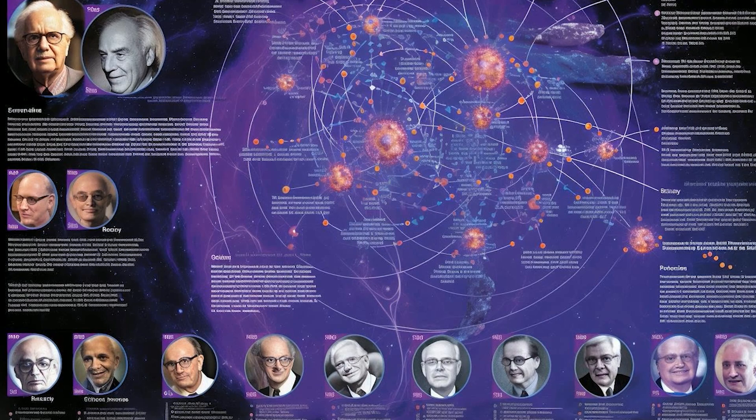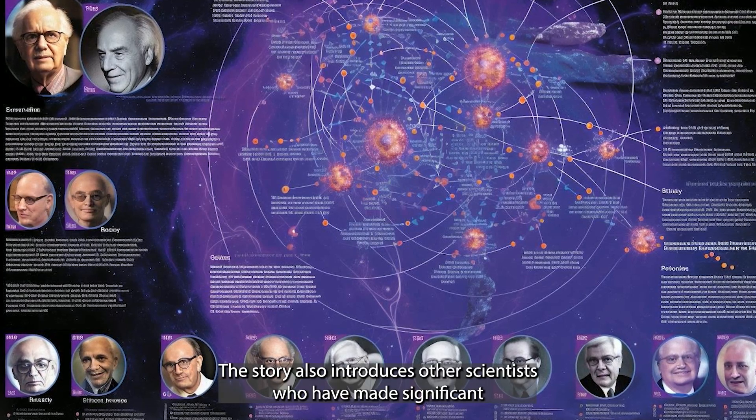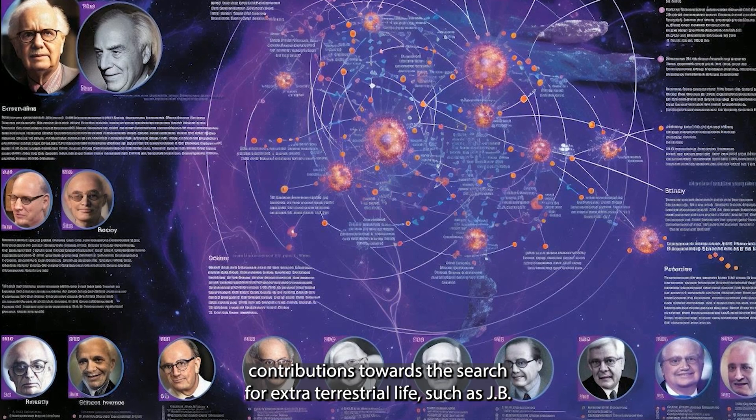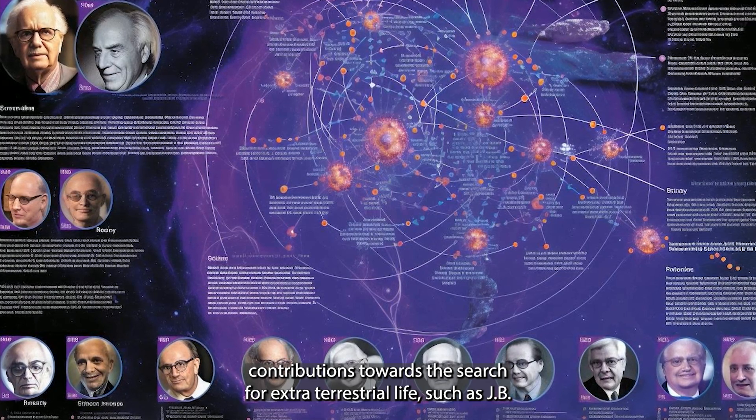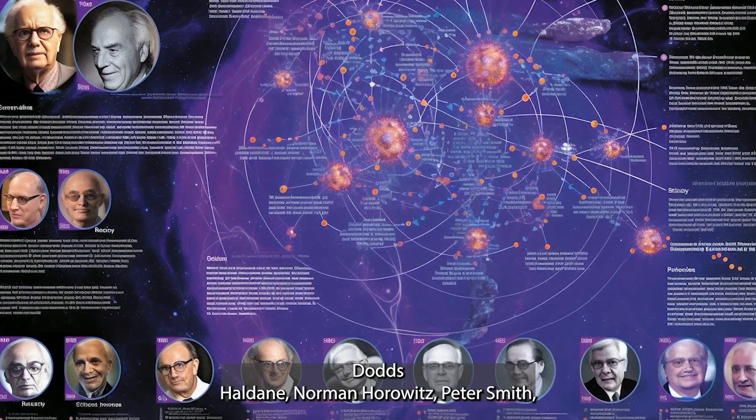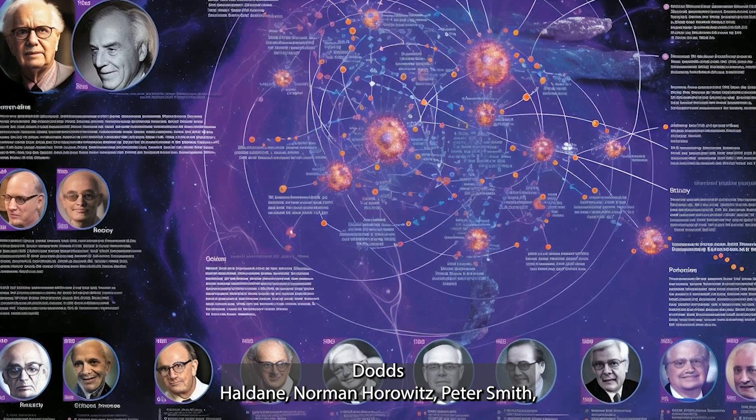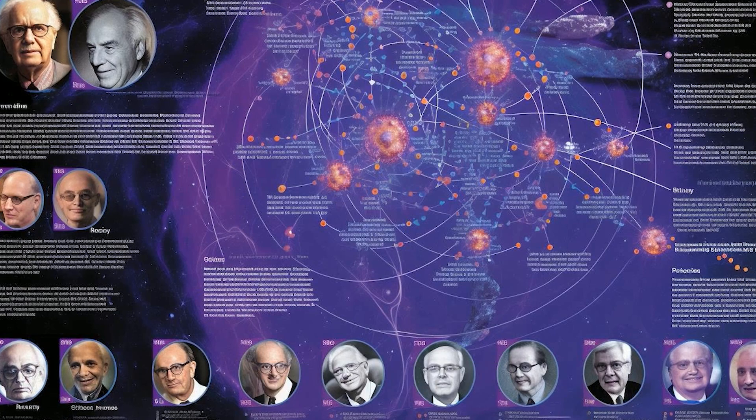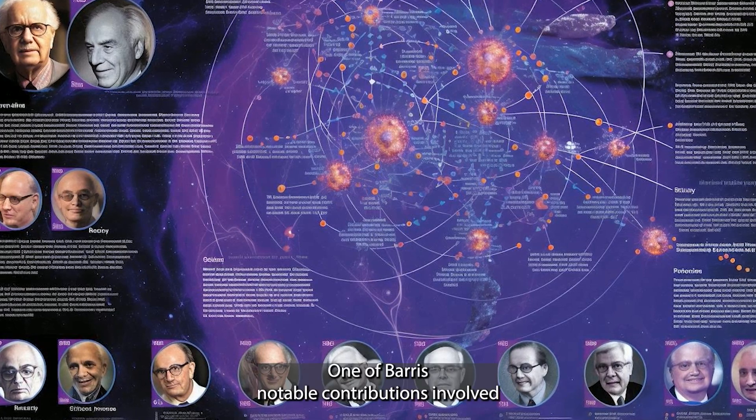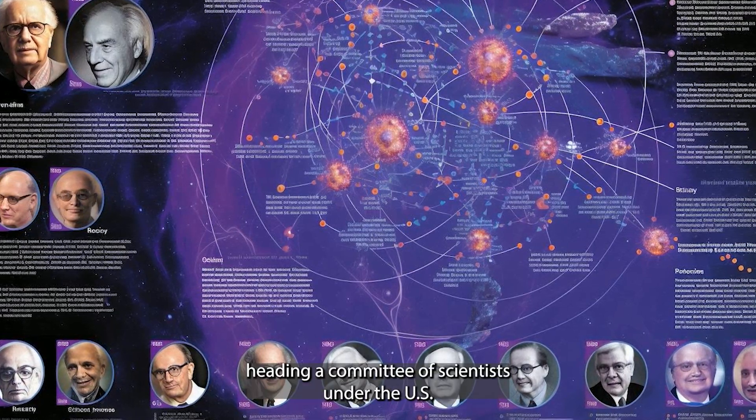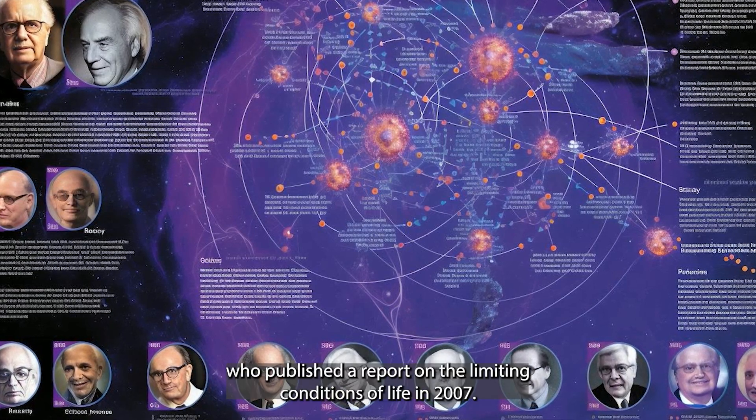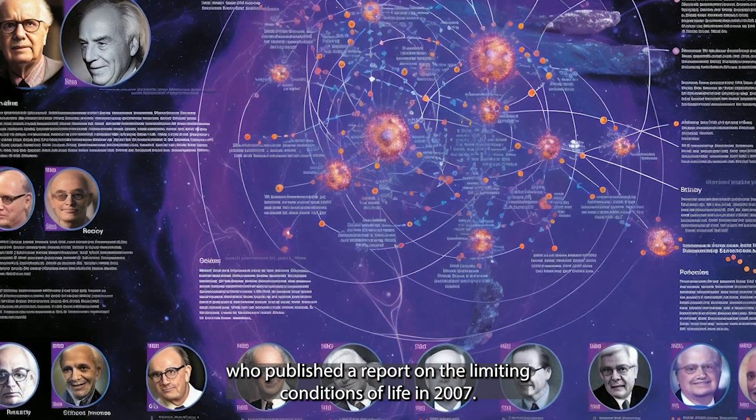The story also introduces other scientists who have made significant contributions towards the search for extraterrestrial life, such as J.B.S. Haldane, Norman Horowitz, Peter Sneath, Gerald Feinberg, Robert Shapiro, and John Baross. One of Baross's notable contributions involved heading a committee of scientists under the U.S. National Research Council who published a report on the limiting conditions of life in 2007.